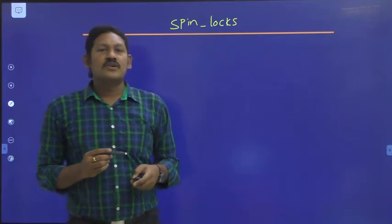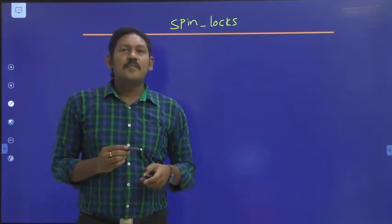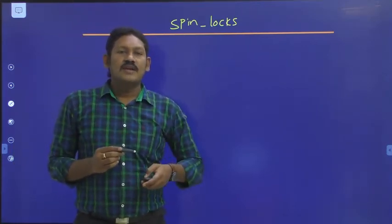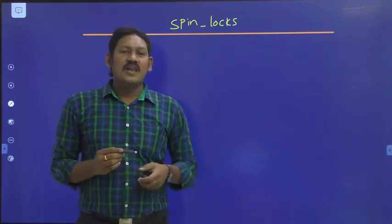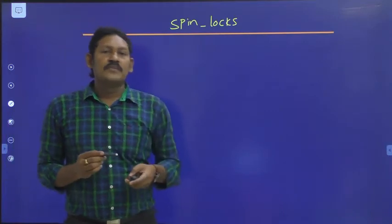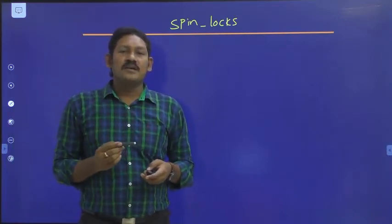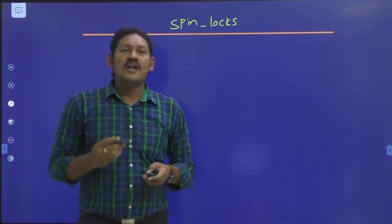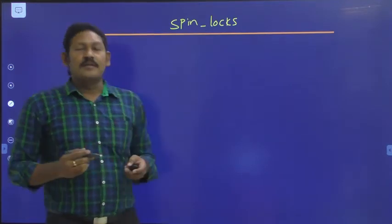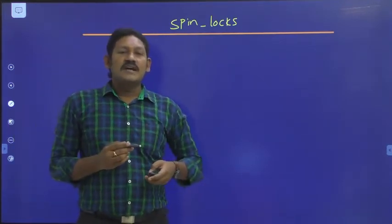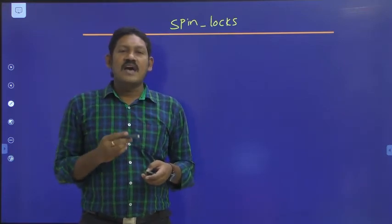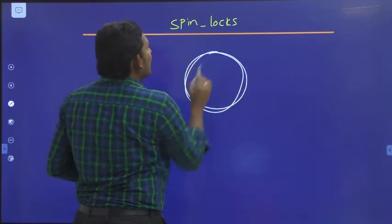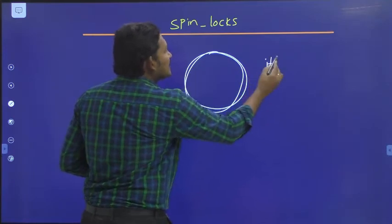Coming to the next mechanism: spin lock. A spin lock is a busy-wait locking mechanism — it waits until the lock is available. Spin locks loop or spin waiting to acquire a lock. If the lock is not available, the thread spins checking the lock's availability and keeps spinning unless it gets the lock.